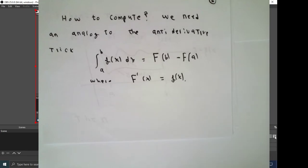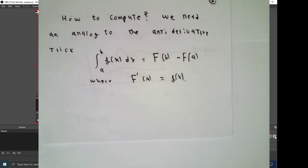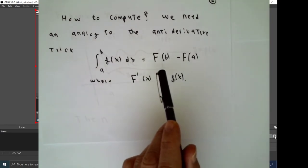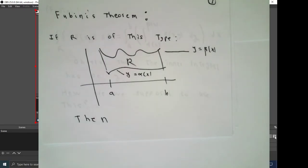Which says if little f is continuous on the interval from A to B, and if you can find an antiderivative capital F, then this definite integral is just the antiderivative evaluated at B minus the antiderivative evaluated at A. Luckily, we have a result for certain types of regions.